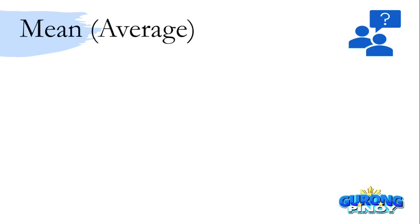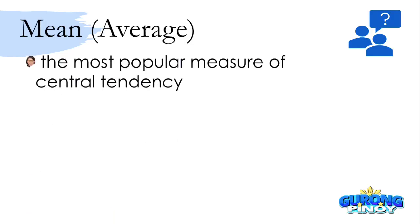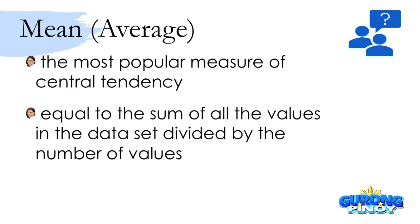Now, we go to the first measure of central tendency, which is the mean or the average. The mean or the average is the most popular measure of central tendency. This is equal to the sum of all the values in the data set divided by the number of values, which means that our formula for the mean would be the summation of x, which is your data value, divided by n, which is the number of values that you have.